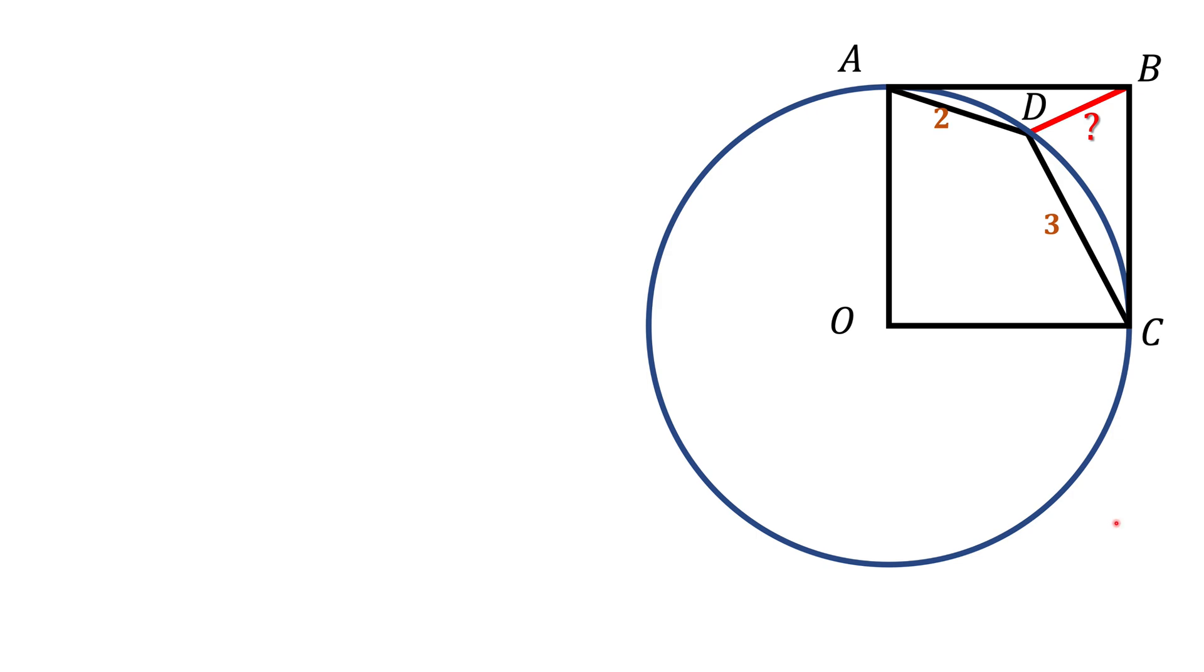We have a circle here and we also have this black square OABC. O is the center of the circle and we have a point D on the circle somewhere and we know that AD is 2, CD is 3, and we're asked about the length of the segment BD.